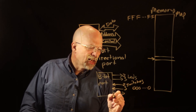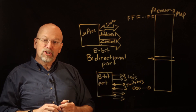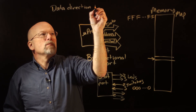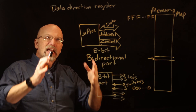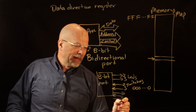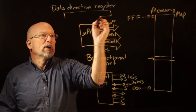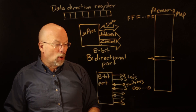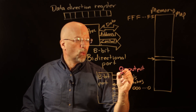To interact with this port we need something called a data direction register. It may go by different names, but that's the general idea of what this memory location acts as. The data direction register might be 8 bits wide, and each bit corresponds to one of the pins on the bi-directional 8-bit port. A zero might mean that pin is an output and a one means it's an input.